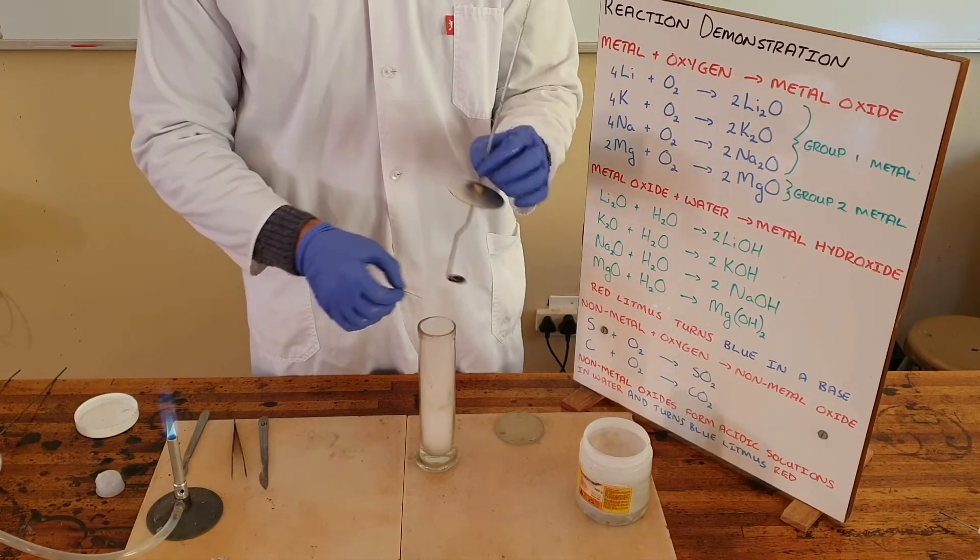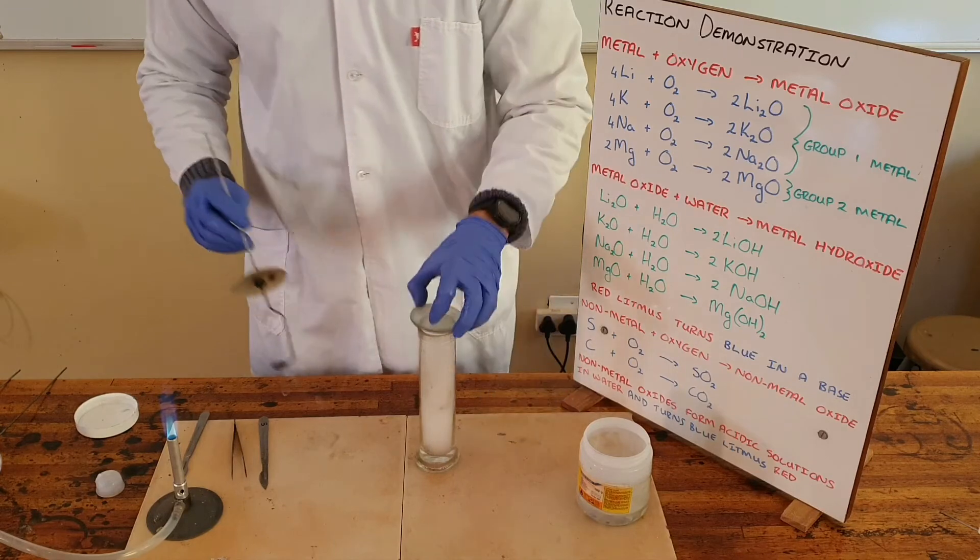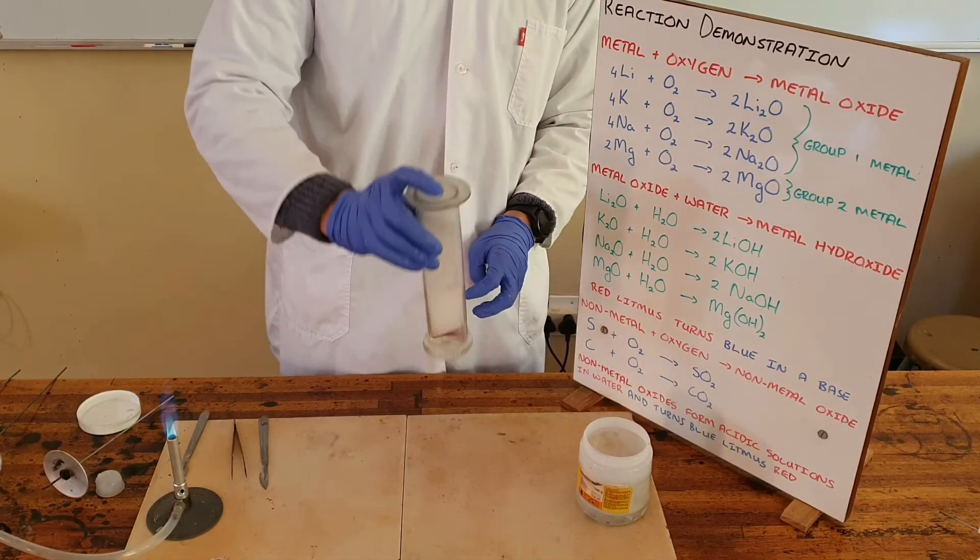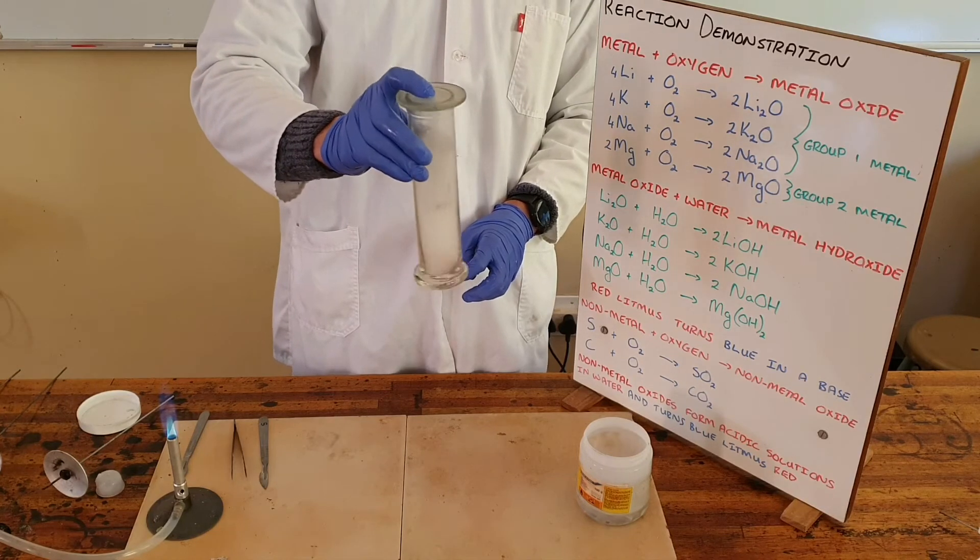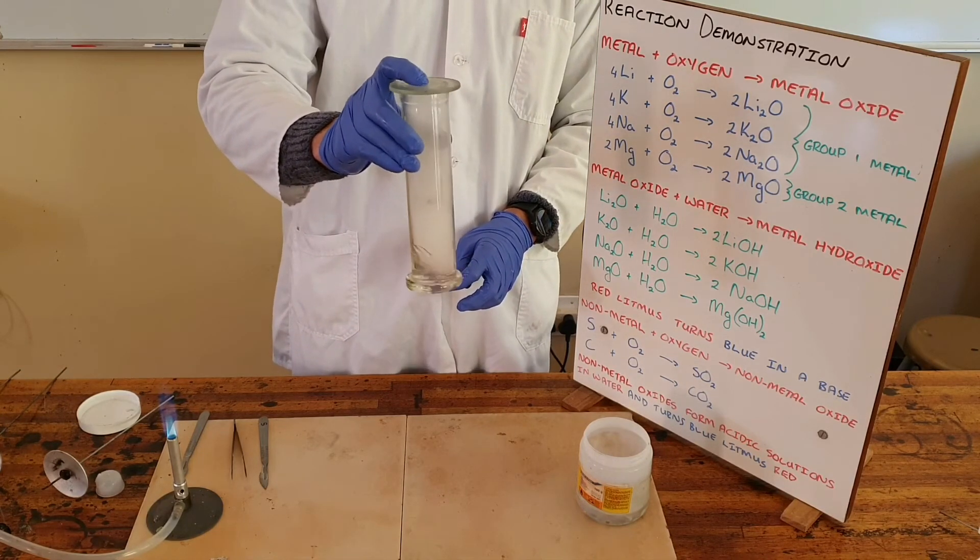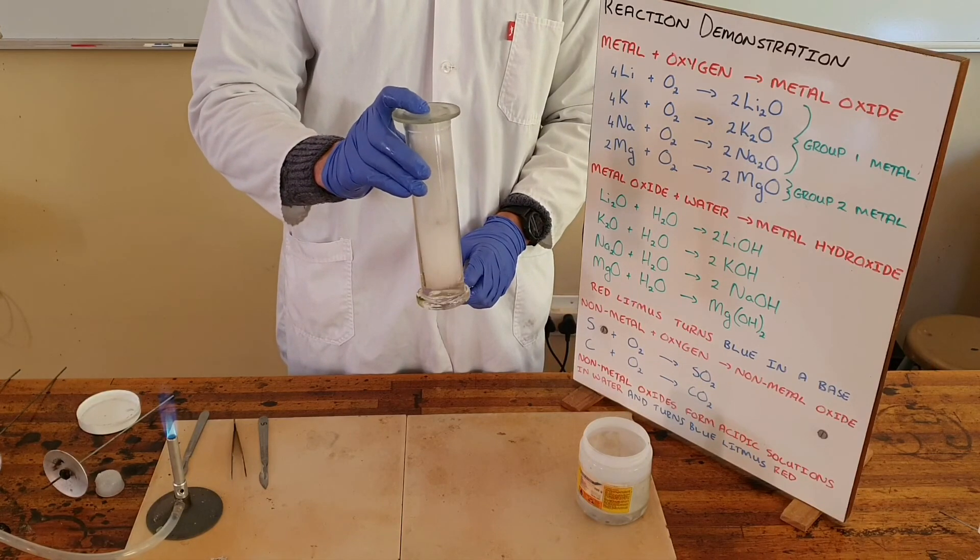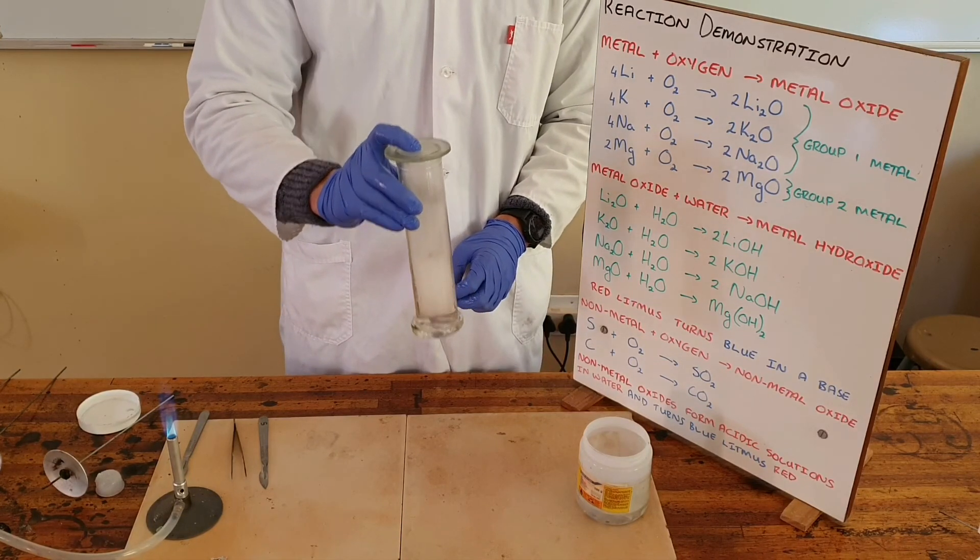We can observe that the red litmus paper changes color to blue almost immediately, once again showing that a metal oxide when added to water forms a basic solution.